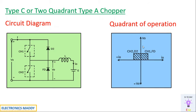How do we say the current is either positive or negative? When CH1 and the freewheeling diode are conducting, current is delivered from the source to the load. When will the freewheeling diode conduct? Whenever CH1 is off, CH2 is also off and the energy stored in the inductor is dissipated in this direction. Consequently, the current will be positive.